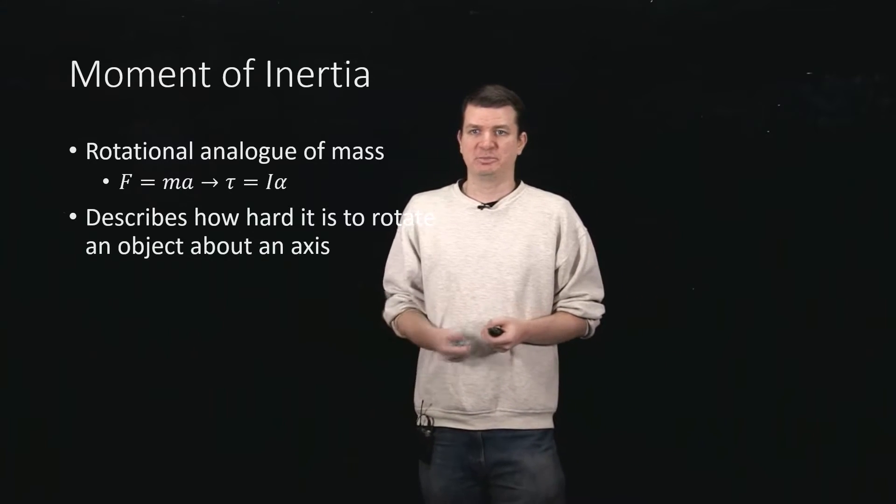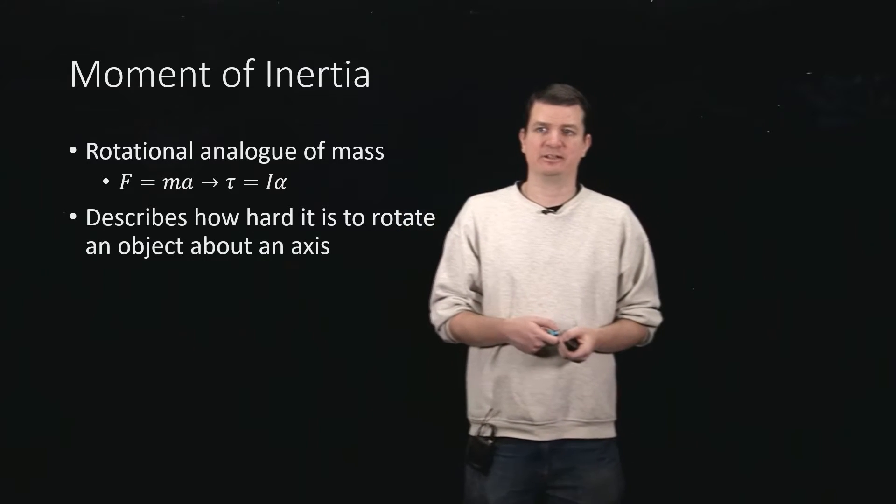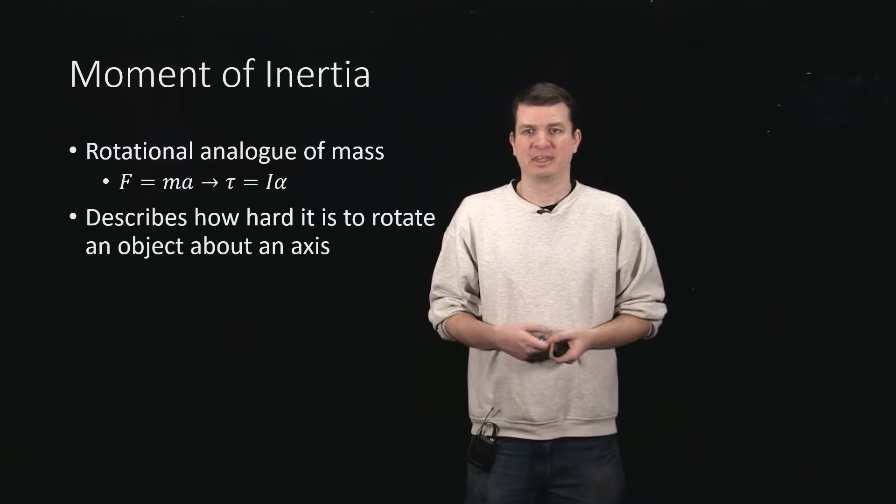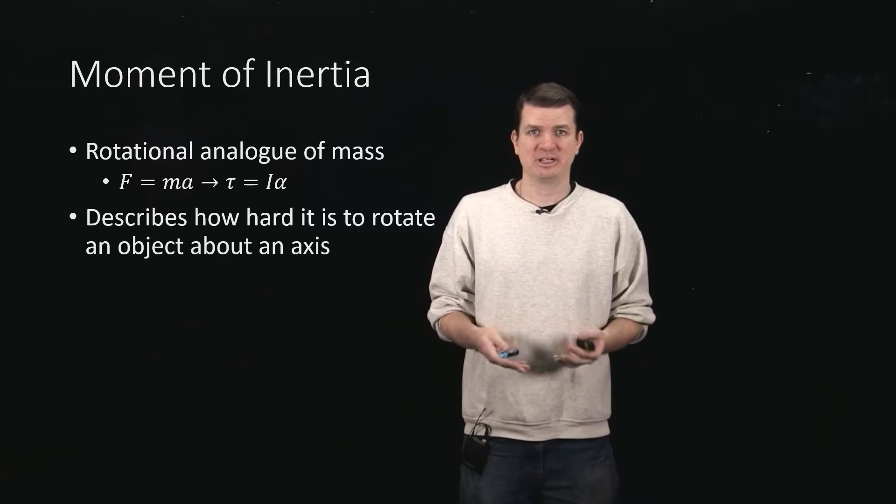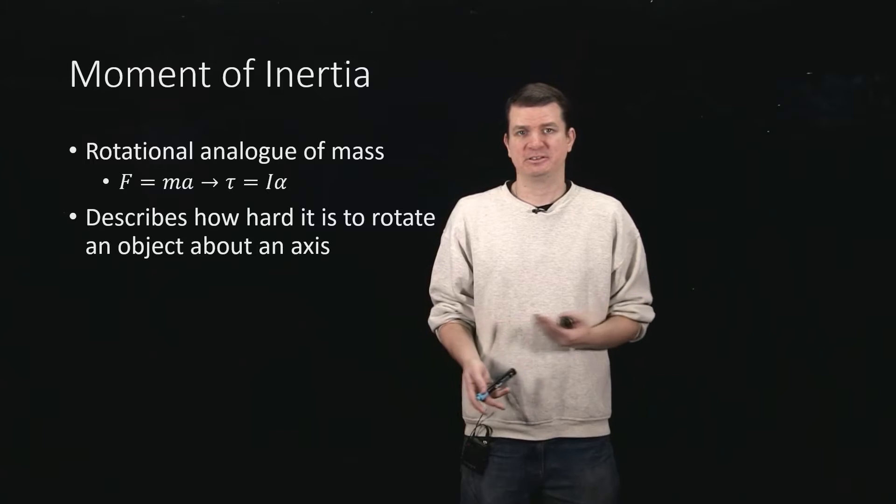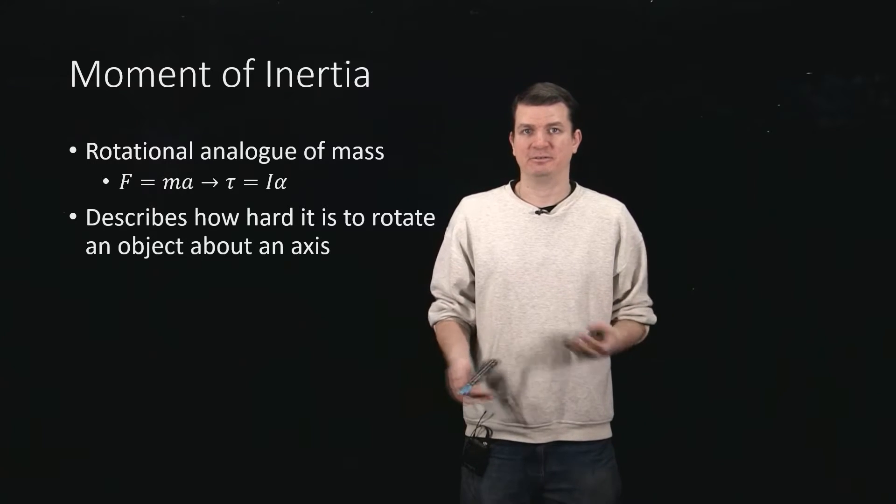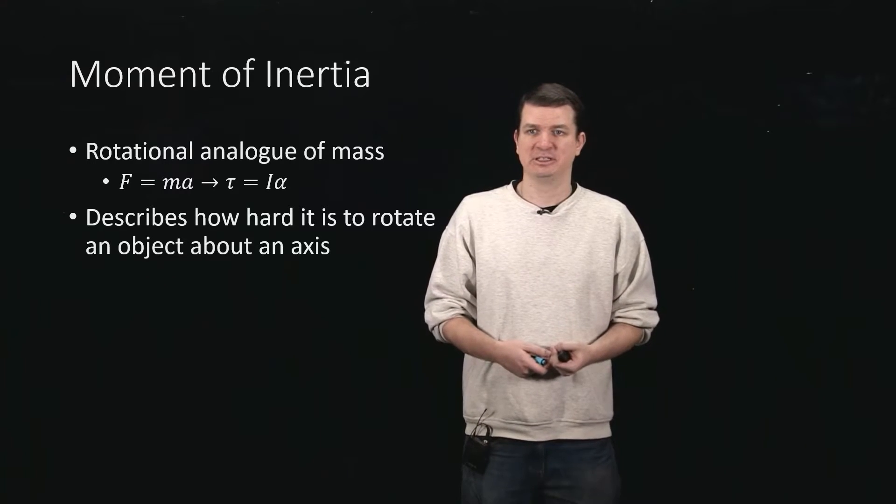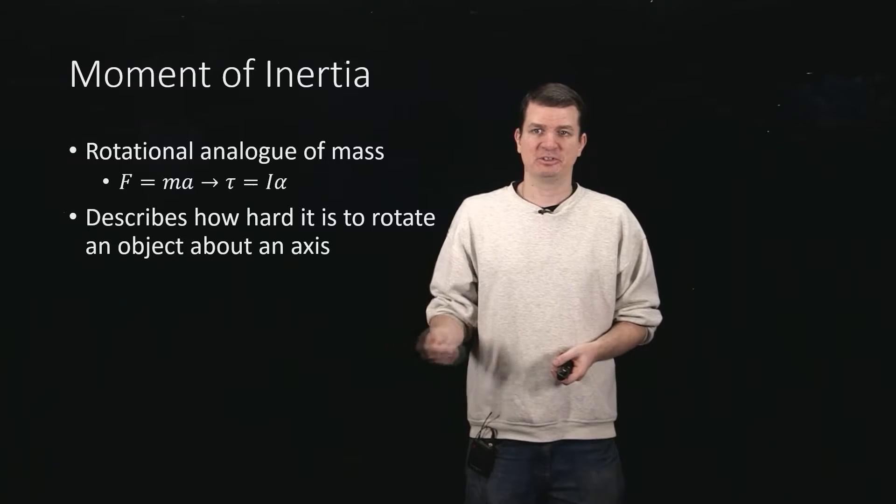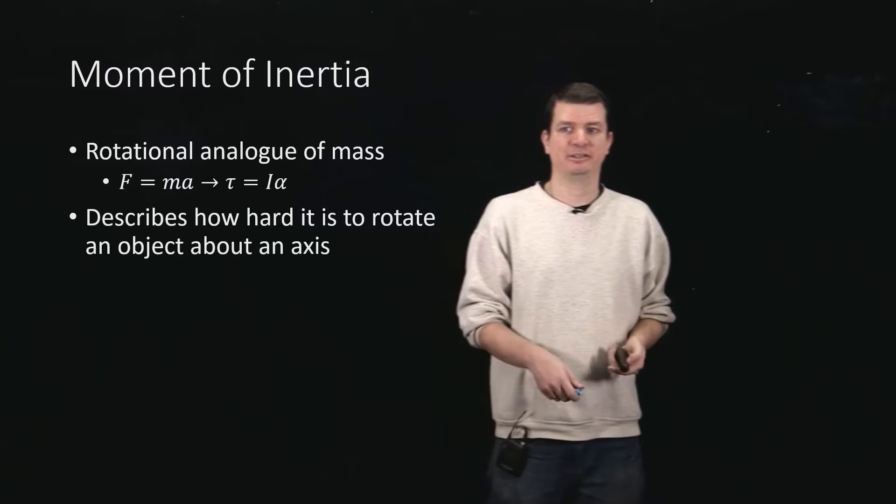And so it's talking simply about how hard it is to rotate an object about an axis. And so remember, with rotational things, you always need to know what it is you're rotating about. So there's some axis of rotation, not surprisingly this moment of inertia is actually going to depend on that axis.